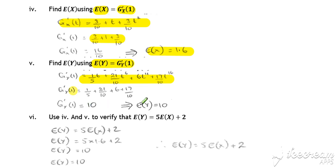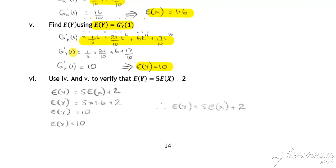Then we'll get the expectation for Y to be equal to 10. And this confirms the result that we met earlier in combinations of discrete random variables that the expected value of Y will be equal to 5 times the expected value of X plus 2.